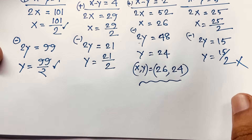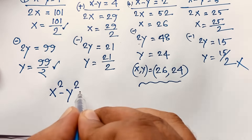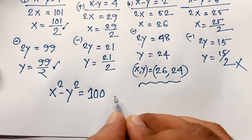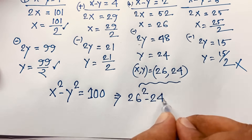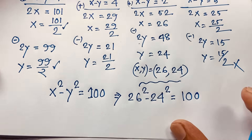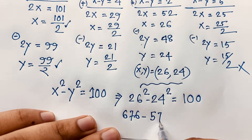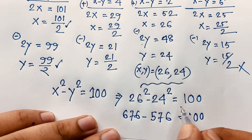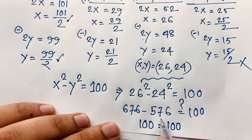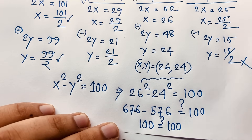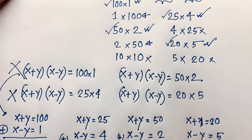Let's verify: x squared minus y squared = 26 squared minus 24 squared = 676 minus 576 = 100. Left-hand side equals right-hand side — correct! If you enjoyed this algebraic problem, please subscribe to my channel for more interesting videos. Goodbye, take care.